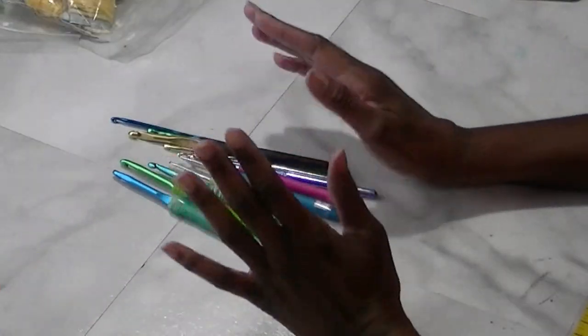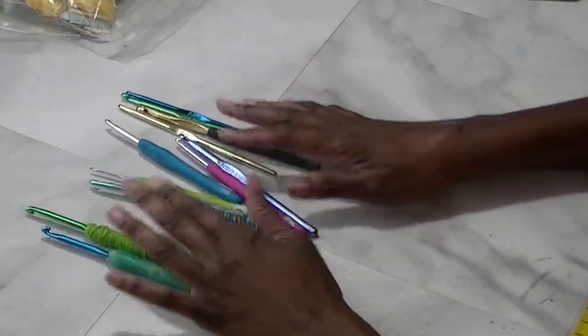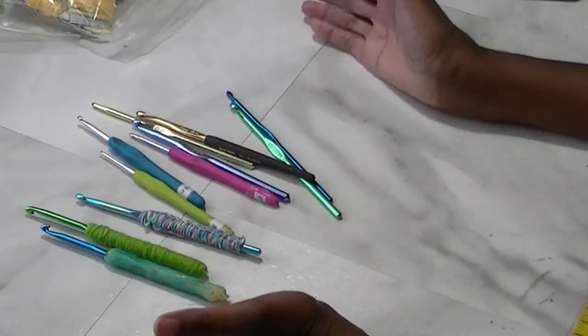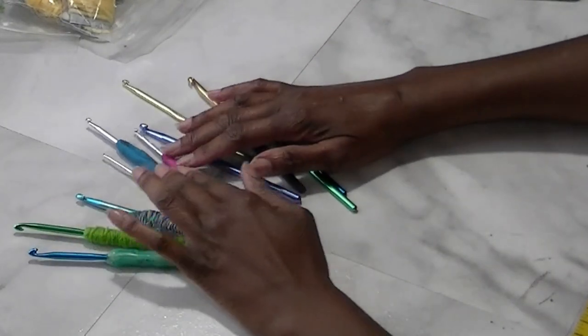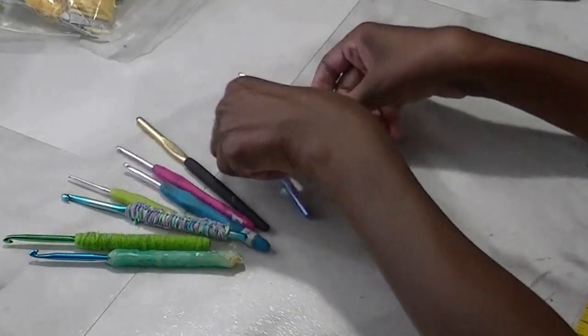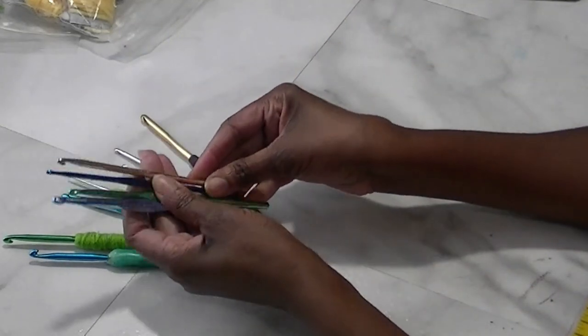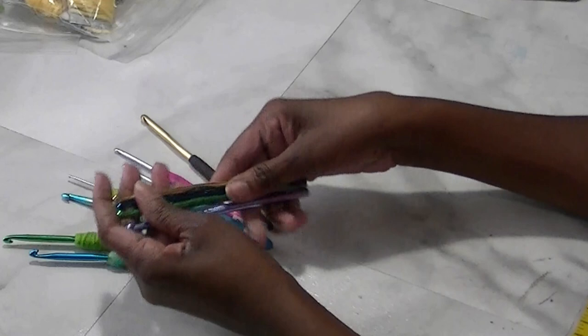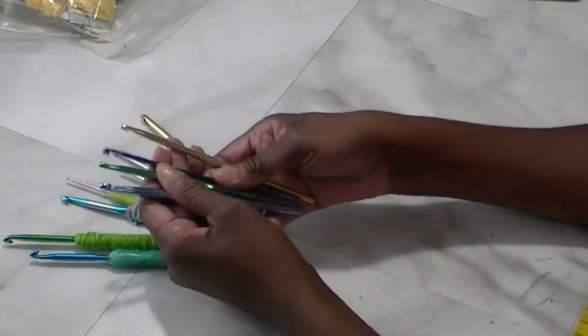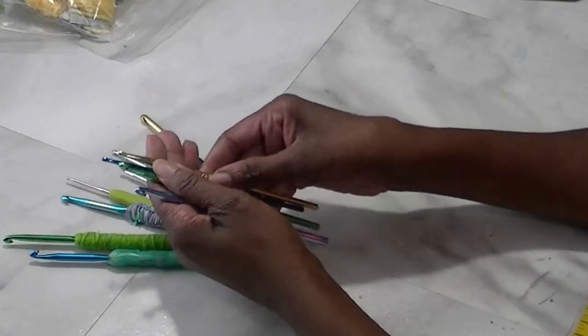If you crochet a lot like I do, you probably have a ton of crochet hooks. You can never have too many, but they come in different types and then they come like this, where they have no grips at all, which they're fine, but they're just hard to kind of grab onto when you work it and they make working and crocheting a little challenging.